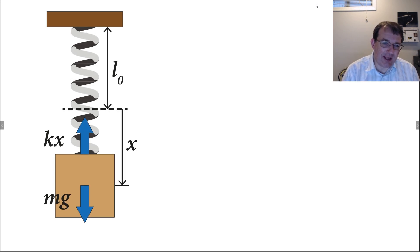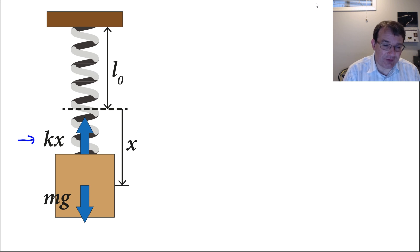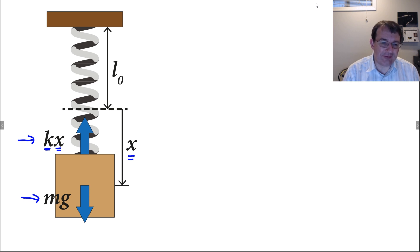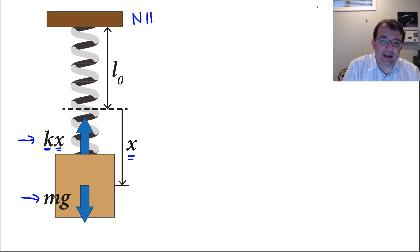We've stopped the mass bouncing and added details to the system — the forces acting on the mass. The first is the force due to the spring, given by Hooke's law: the spring constant K times the extension of the spring X, where the extension is defined as the difference between the total length of the spring and its natural length. Then we have the additional force of gravity — the constant force, which is the mass multiplied by the gravitational field strength — and that acts downwards.